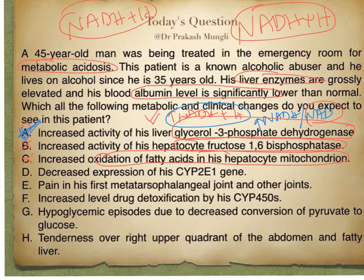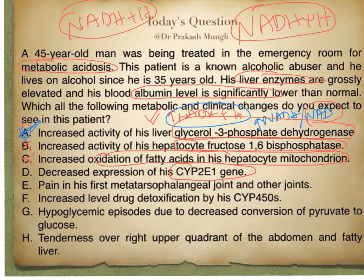Option D says increased expression of the cytochrome P450 2E1 gene. Cytochrome P450 2E1 handles detoxification of alcohol in the hepatocyte — approximately 10% of alcohol is detoxified this way. Since this patient is a chronic alcoholic, there will be induction of the CYP450 2E1 gene. However, since option D is written as 'decreased expression,' that choice is incorrect.